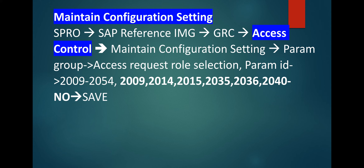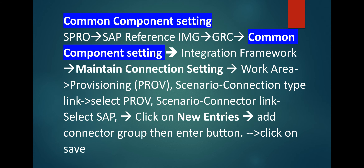Maintain configuration setting under access control, then common component setting. Go to the common component setting by the given path: Integration Framework > Maintain Connection Setting > Work Area Provisioning. For provisioning, scenario connection type — select PROV; for provisioning scenario connector link — select SAP. Click on New Entries, add connector group, then Enter and Save.